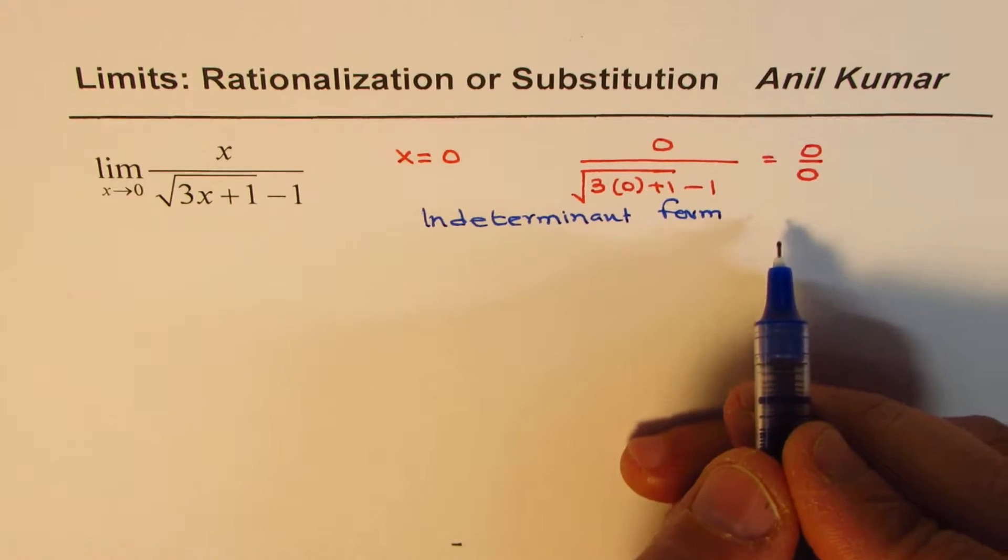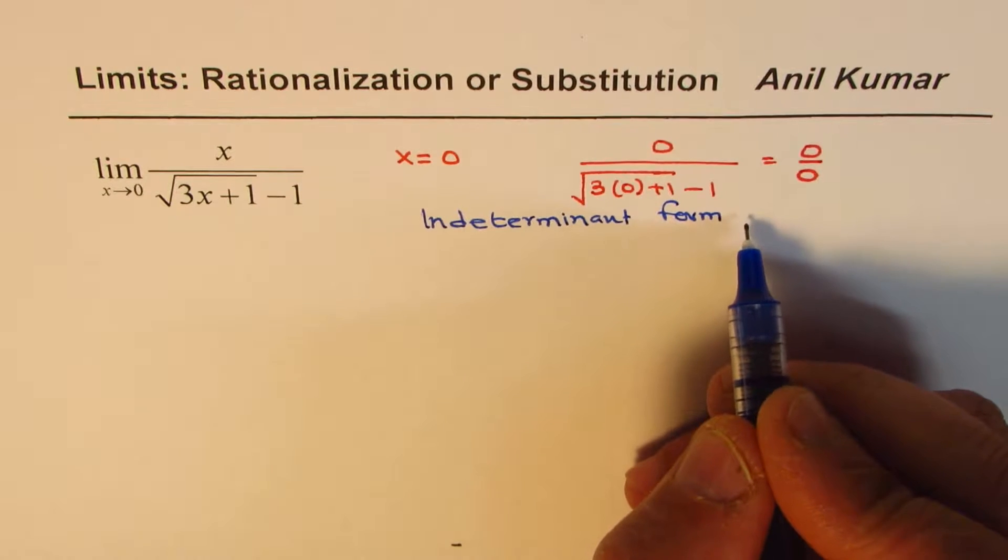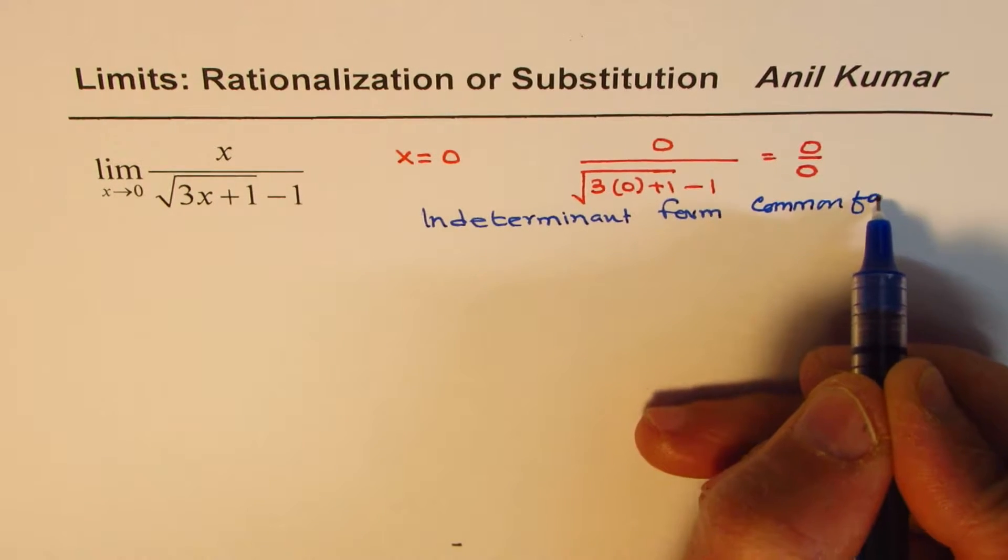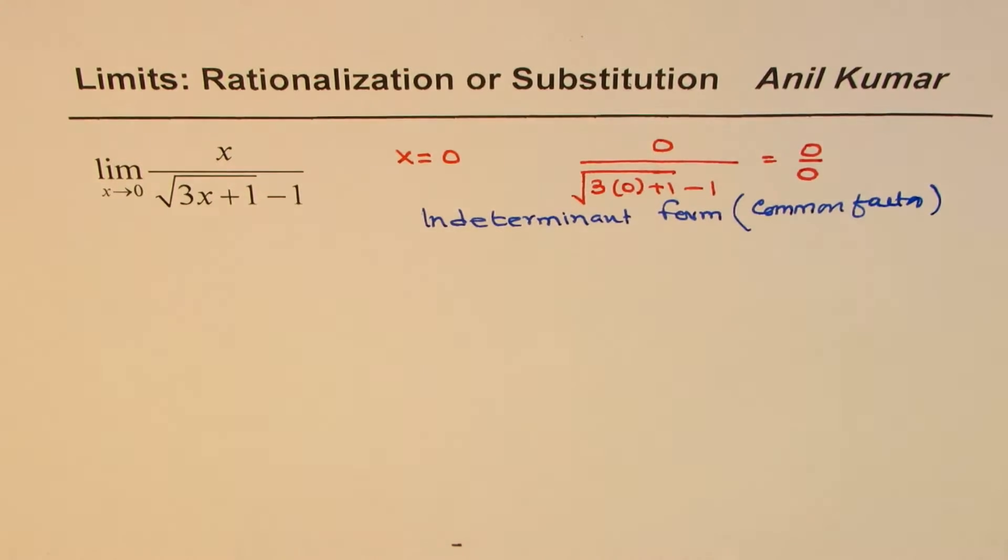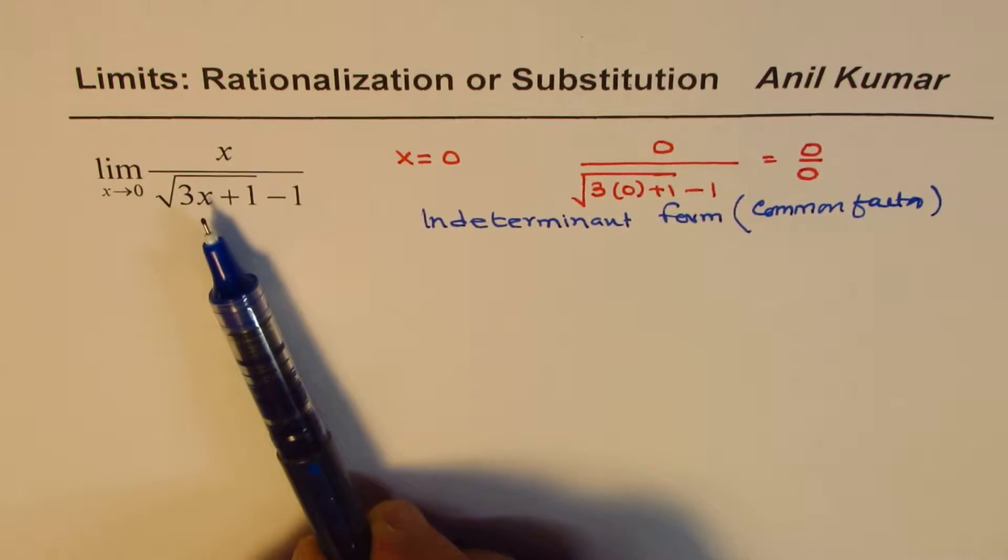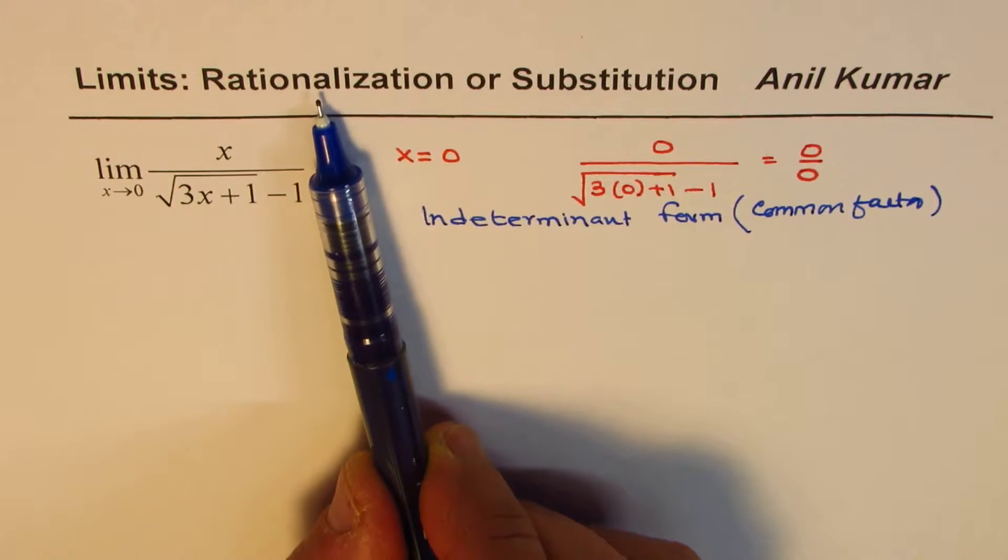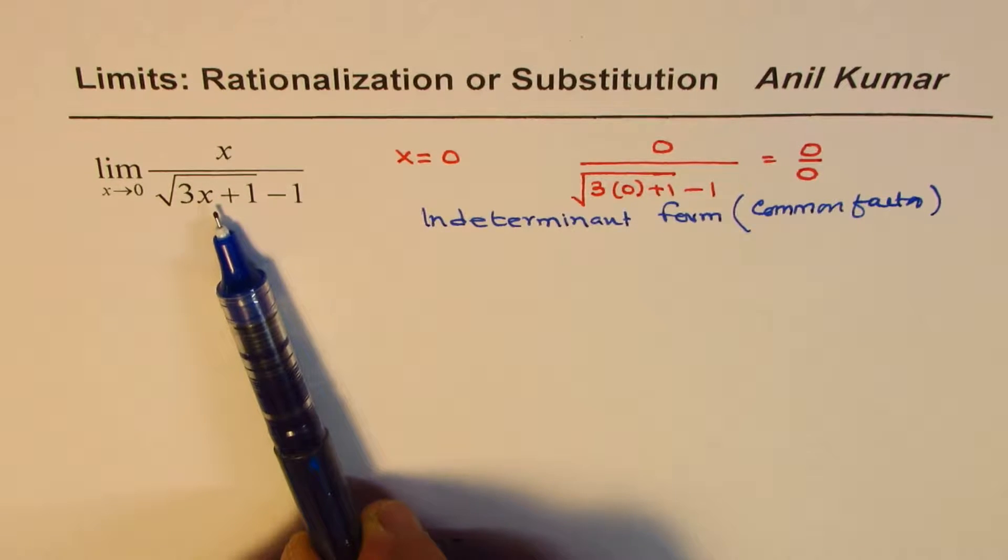If you get 0 over 0, this is called indeterminate form. Dividing by 0 is meaningless but it tells you one important thing and that is that there is a common factor in both numerator and denominator. So the idea is somehow to extract that common factor. Now when we have square root functions, the best way is to rationalize.